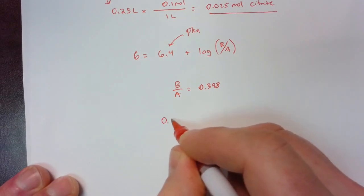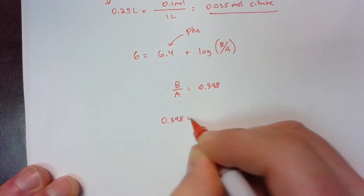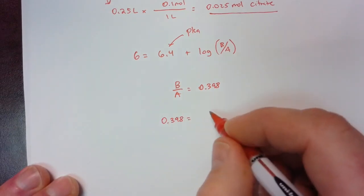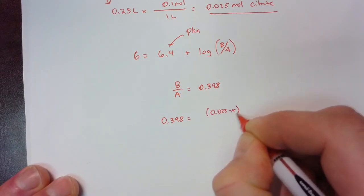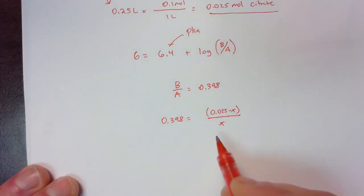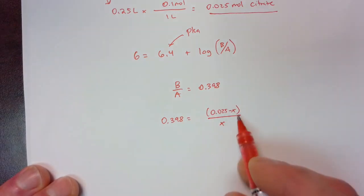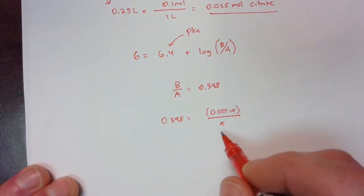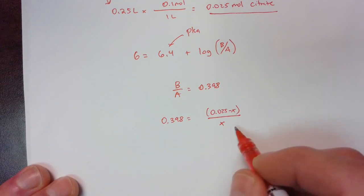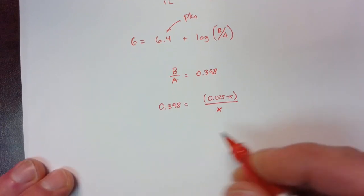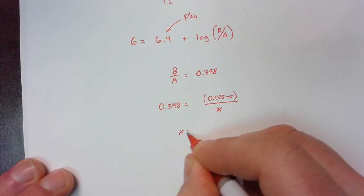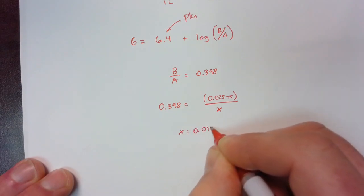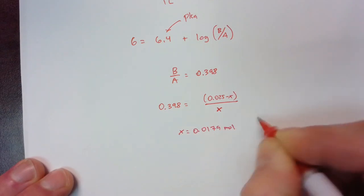And then we're going to solve for exactly how many moles we need based on our concentration using the same equation, solving for moles of acid. You could flip-flop this. It doesn't really matter as long as you know what x is and you assign it accordingly.